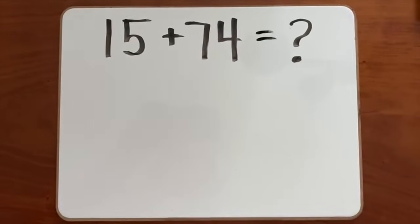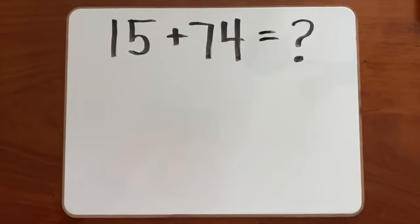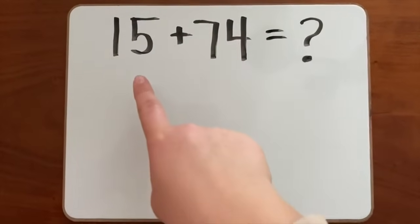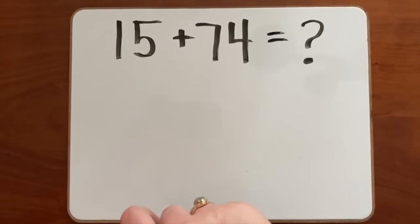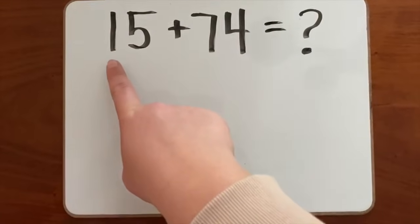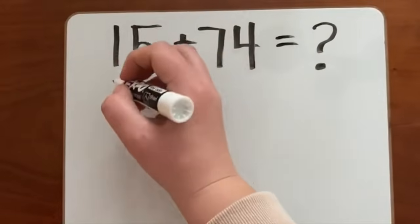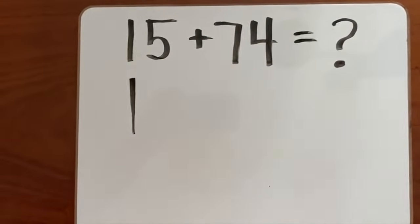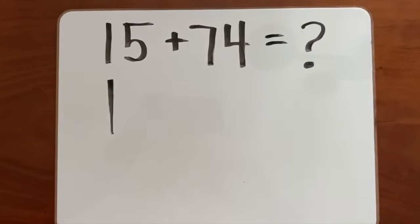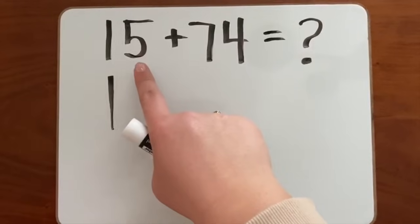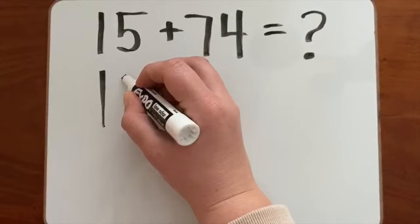Let's solve the equation 15 plus 74 by drawing our longs and cubes. For the number 15, how many longs would we need? We would need one long because there is a one in the tens place. There is only one ten in 15. So I'll draw one long. And how many cubes would we need for that number? Five cubes. There's a five in the ones place, so we have five cubes or five ones.